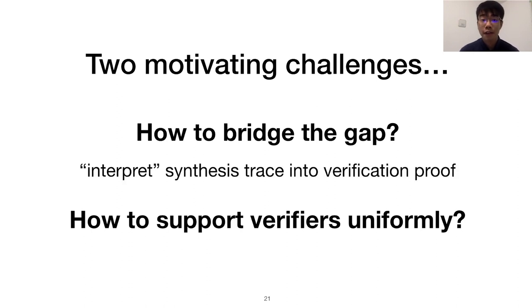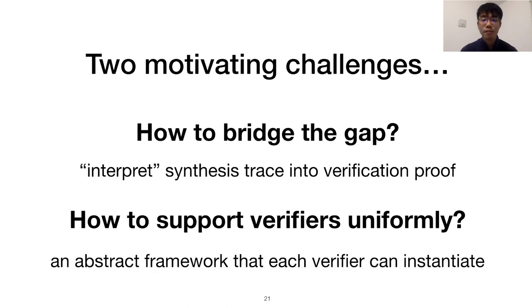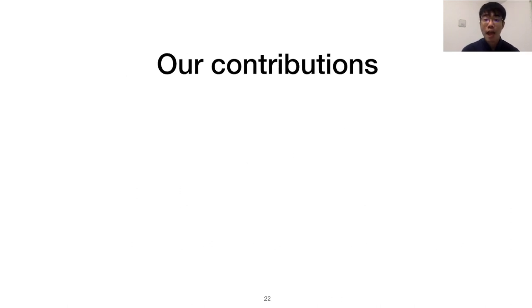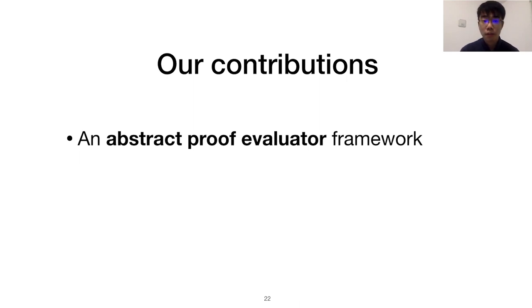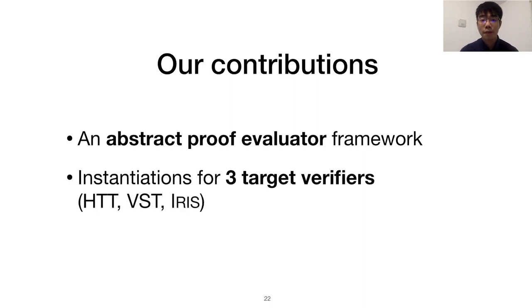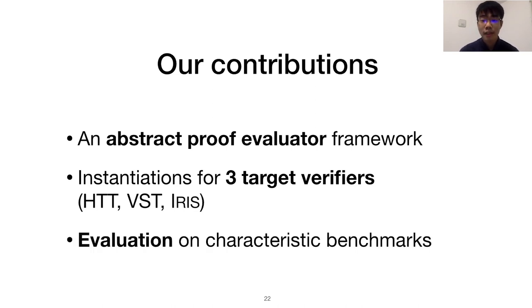To overcome the synthesis verification gap, we need a way to interpret synthesis proofs into verification ones. And to remain verifier agnostic, it must be an abstract framework that multiple target verifiers can instantiate. For these reasons, we present a design for an abstract proof evaluator that interprets a synthesis trace into a machine checkable proof certificate. We then demonstrate the generality of the evaluator's design by instantiating this abstract evaluator for the three verifiers, HTT, VST, and IRIS. And finally, we apply this technique to certify Syslic's synthesis of characteristic benchmark programs.